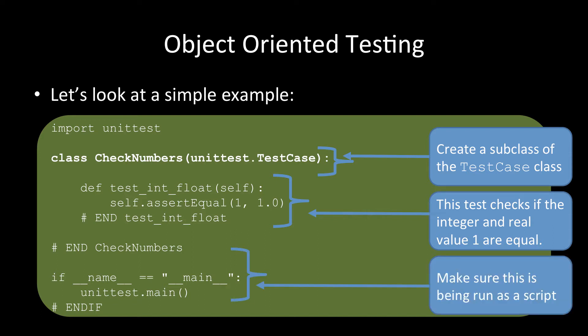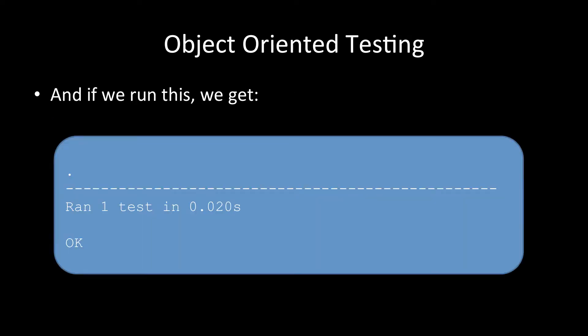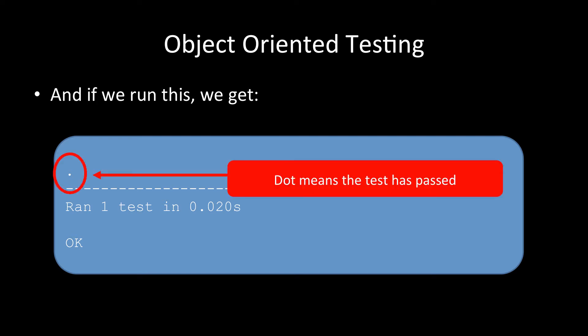We have a little bit of code at the end __name__ equals __main__ to check that this has been called directly from the command prompt being run as a script. If we run it what we get is dot, ran one test in 0.020 seconds and OK, so that means the test was passed. The thing that tells us the test was passed is this dot here. A dot means when you run a test case program the test has passed.